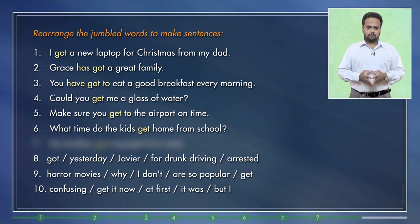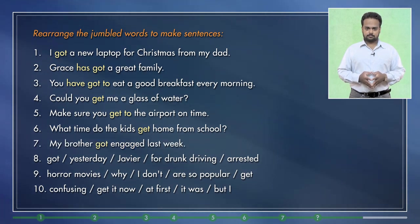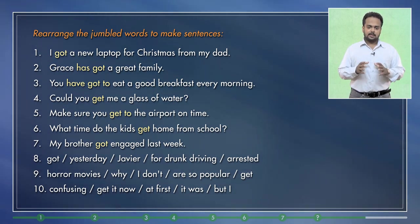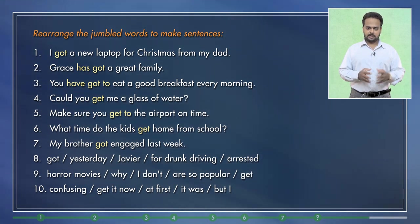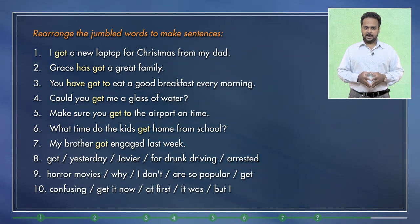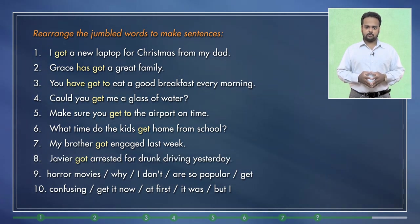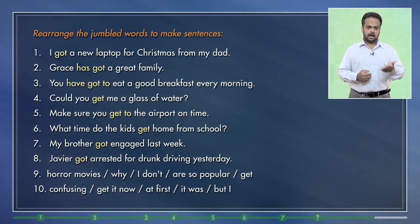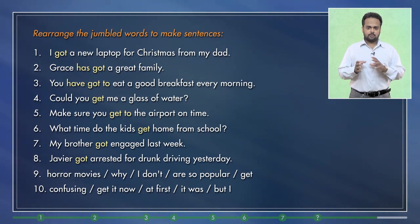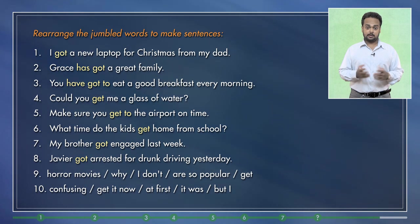Number six – What time do the kids get home from school? Again, get means reach here, but we don't use to because home is an adverb. Number seven – My brother got engaged last week. You could also say, last week my brother got engaged. This means he became engaged. That is, he has agreed to get married to a woman sometime in the future. Number eight – Javier got arrested for drunk driving yesterday. You could also say, yesterday Javier got arrested for drunk driving. We use get or got here to show that something bad happened to Javier. He was arrested.